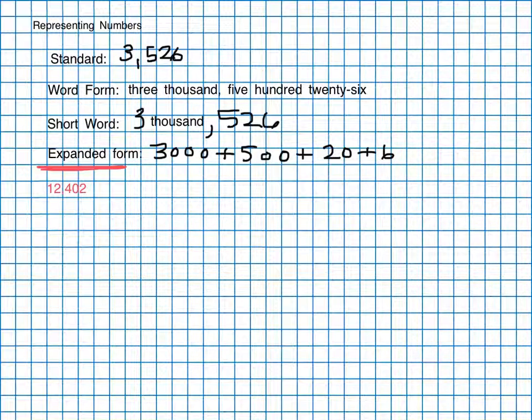All right, when we put this in word form we're going to write twelve thousand, and then we're going to put our comma because that's where it is, four hundred two. And that's what that's going to look like in word form.